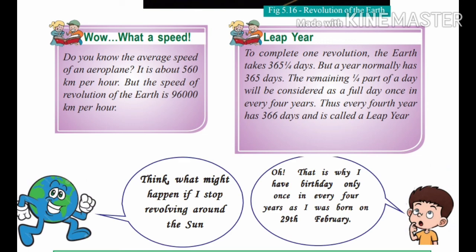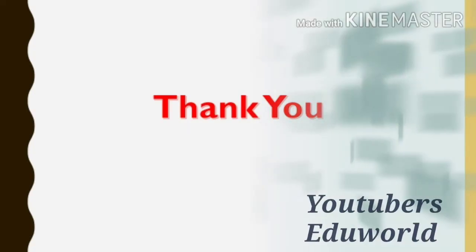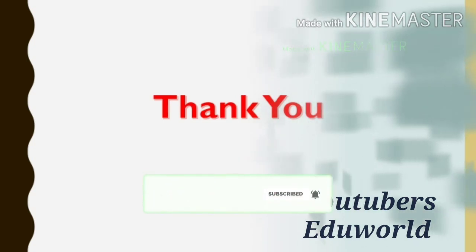The extra day is added in the month of February, so in a leap year, February has 29 days. To summarize, we have learned about the two movements of the earth: rotation and revolution. Day and night are caused by rotation, and seasons are caused by the revolution of the earth. Thank you for watching. If you liked the video, don't forget to subscribe to the channel.